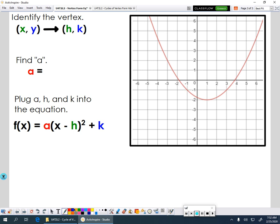Start with identifying your vertex. The vertex is over 1, down 2. So my x value is 1. My y value is going to be negative 2 because we go down. Which means my h value is 1. My k value is going to be negative 2.